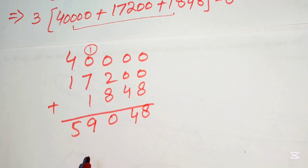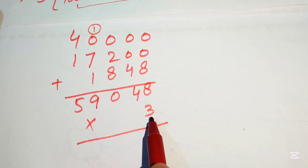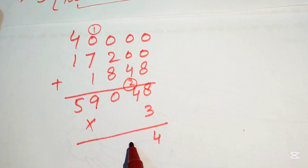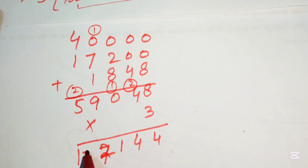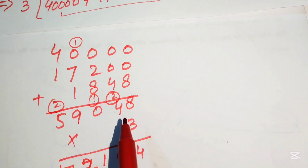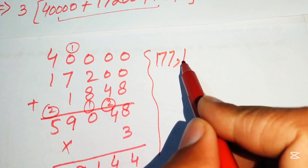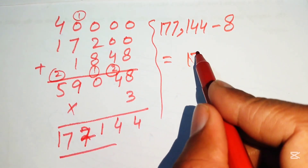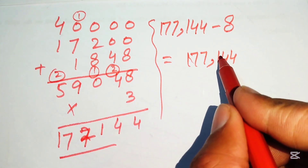Now we multiply 59,048 by 3: 3 times 8 is 24, write 4 carry 2; 3 times 4 is 12 plus 2 is 14, write 4 carry 1; 3 times 0 plus 1 is 1; 3 times 9 is 27, write 7 carry 2; 3 times 5 is 15 plus 2 is 17. This gives 177,144, minus 8, which equals 177,136.